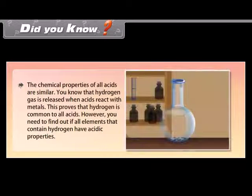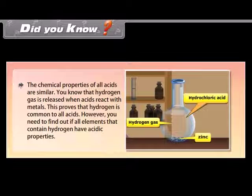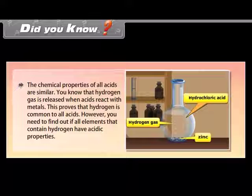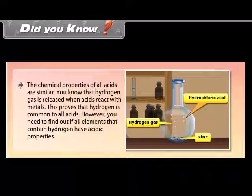The chemical properties of all acids are similar. Hydrogen gas is released when acids react with metals, which proves that hydrogen is common to all acids. However, you need to find out if all elements that contain hydrogen have acidic properties.